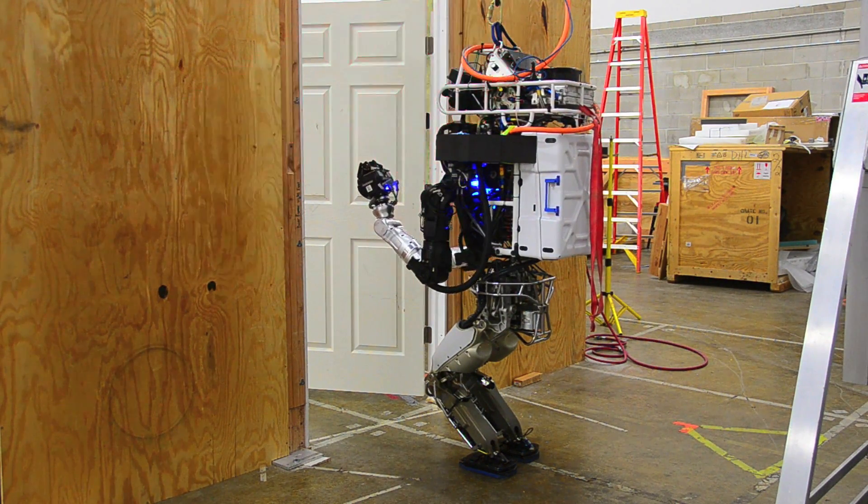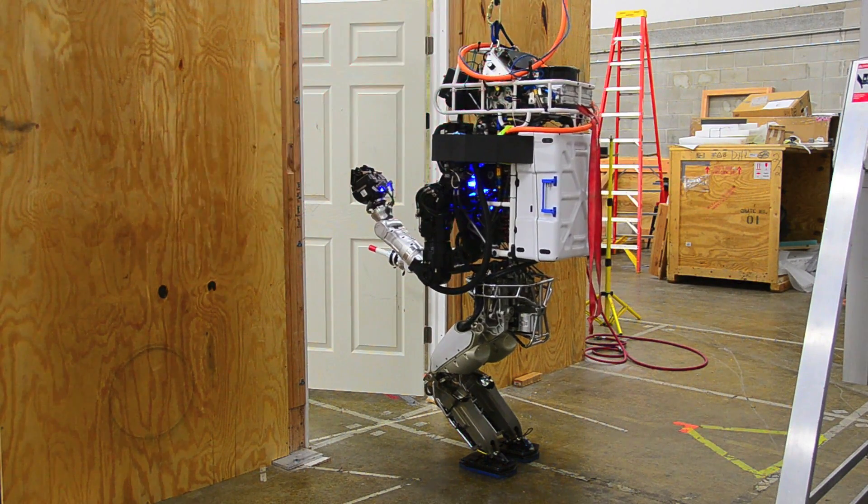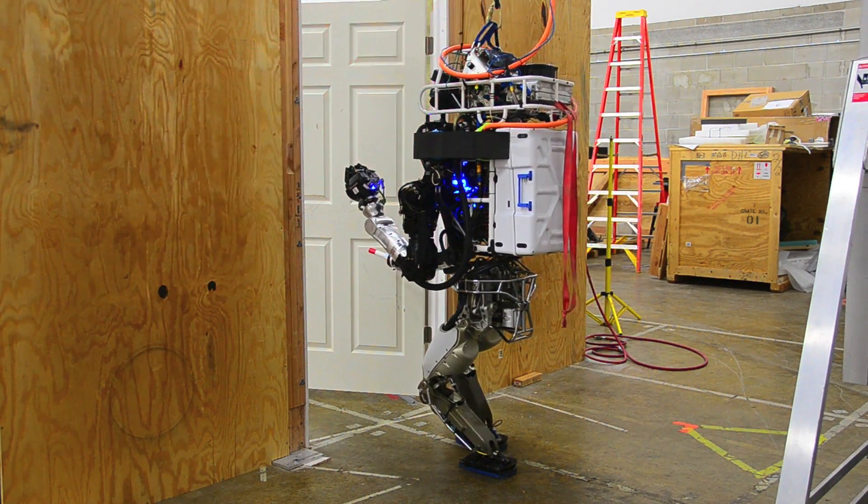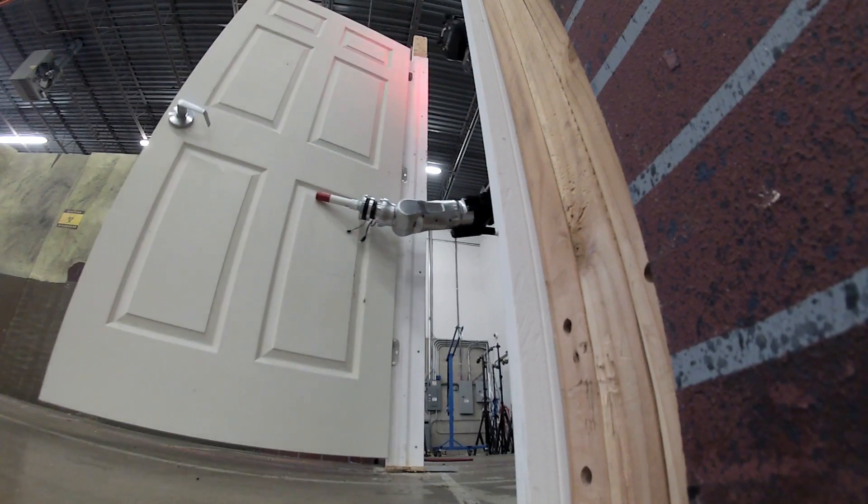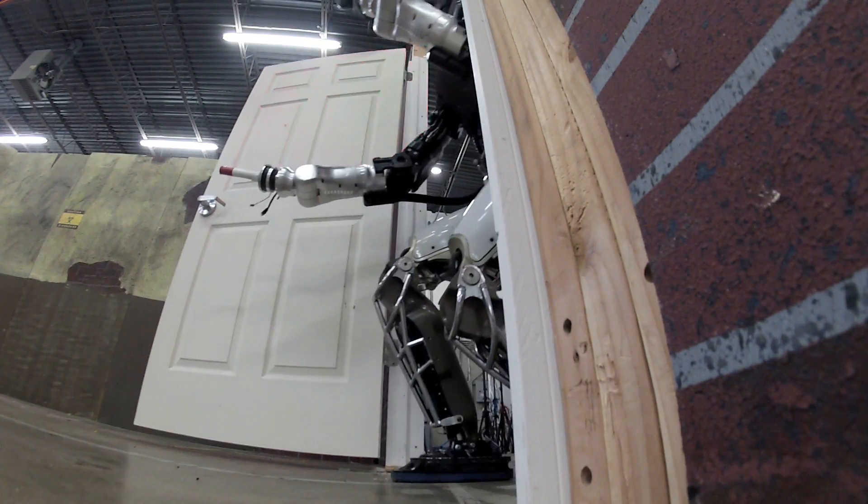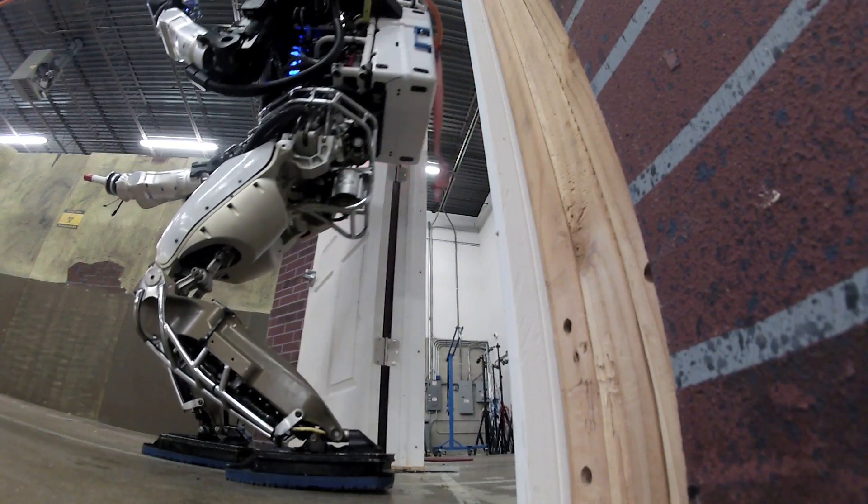For the DARPA Robotics Challenge, there has been somewhat of an emphasis to design tasks that reflect the types of things that we would have a human do in a disaster situation. And so a robot with a human form factor sort of mimics the capabilities that a human first responder would have.